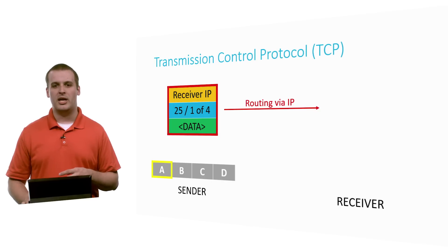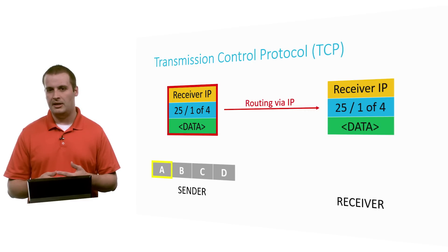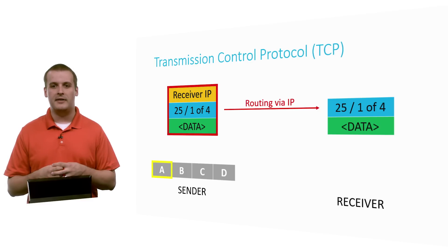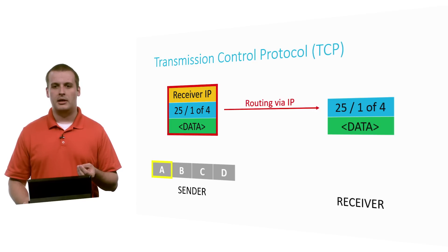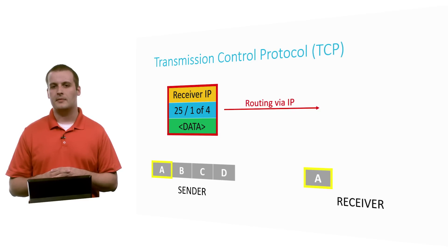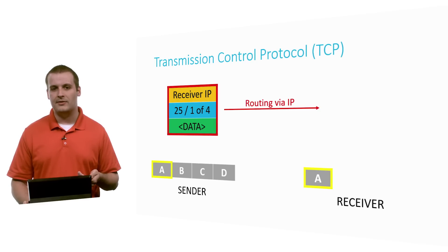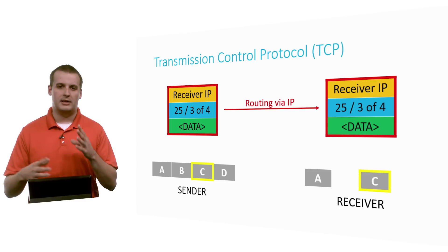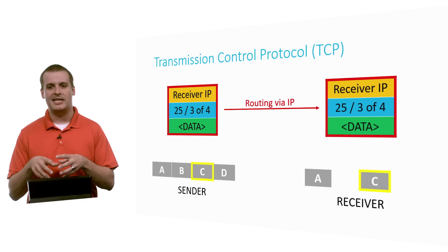That packet gets routed through the router network using internet protocol, and the receiver receives the entire thing. It looks at the IP layer — the outside layer — confirms that's its IP address, discards it, and looks one level deeper. It sees that this data is intended to be received on port 25 and is apparently the first part of four. Because of the internet protocol, it's not necessarily the case that the next packet received is packet two — the next one might be packet three, because packets took different paths due to different traffic on the network. Packet three arrives, gets stripped of its IP and TCP layers, and the data gets put in the right spot.